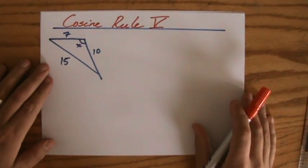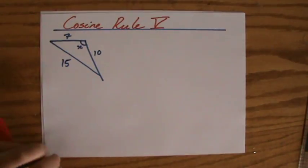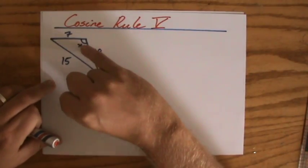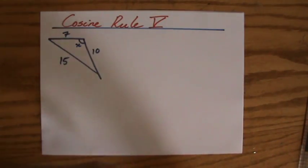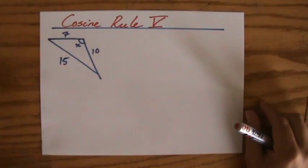We're going to have a look at one more example question involving the cosine rule. They gave me a triangle and they want me to find the size of angle x. Before, of course, now I know it's the cosine rule that they're looking for, but I should ask myself the following questions.